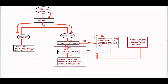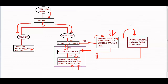If the secondary device misses three keepalives back to back, it assumes the primary is down, becomes the primary, and brings up all VPC member ports plus the VPC VLAN SVIs. Also, if after this situation the secondary had brought down the ports and SVIs and then the primary fails completely, it will again wait for three missed keepalives before assuming the primary is down and becoming primary itself. In our next section we will discuss one more failure scenario.